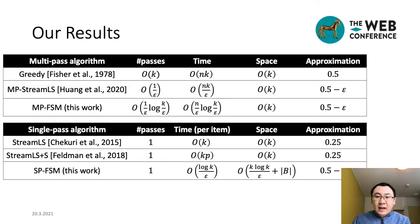Here are our main results in this work. In the multi-path setting, our algorithm has lower time complexity than existing algorithms, with the same approximation factor of 0.5 minus epsilon. In the single-path streaming setting, our algorithm improves the approximation ratio of the existing algorithm from 0.25 to 0.5 minus epsilon.